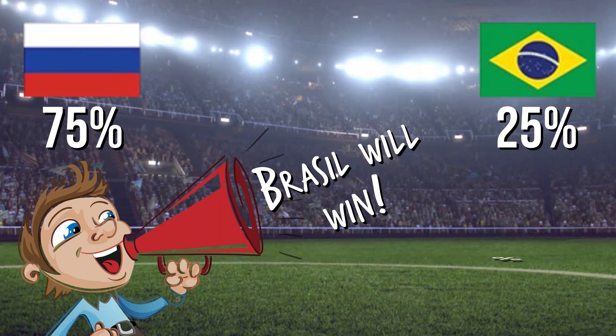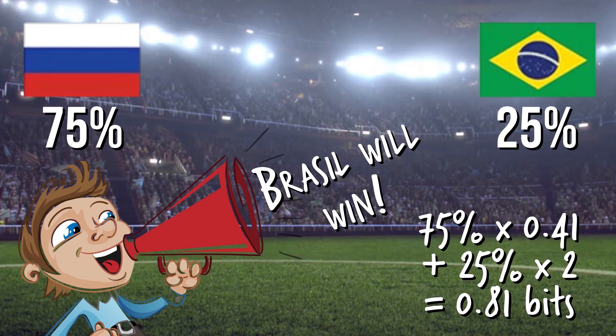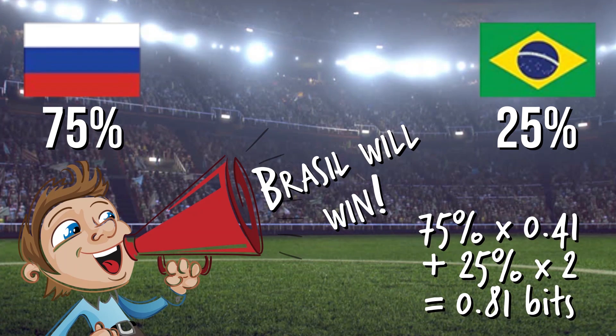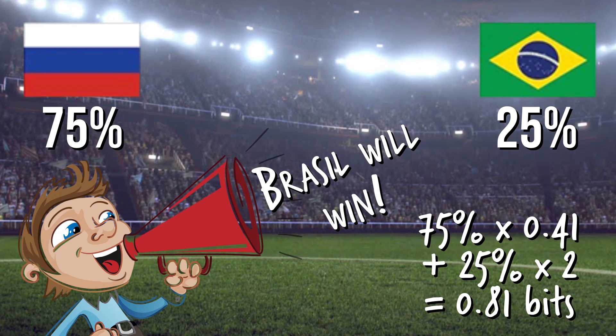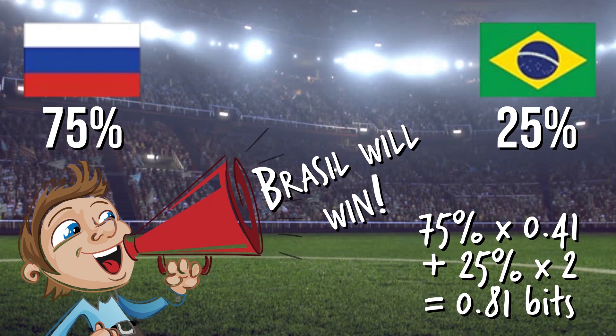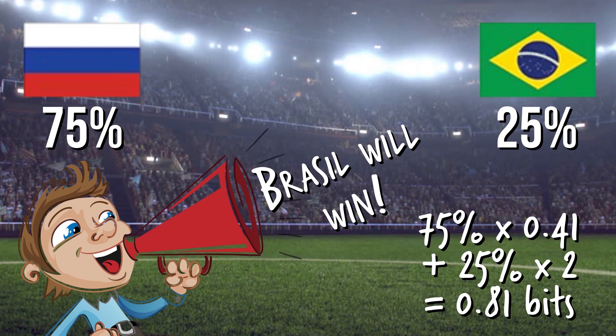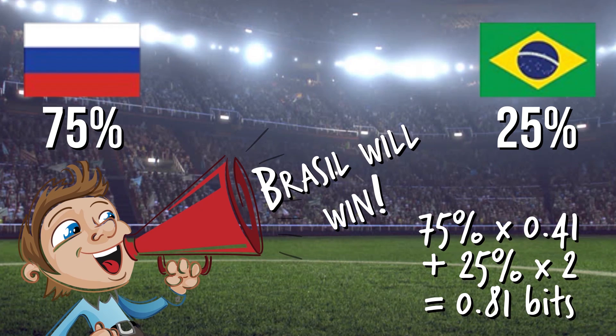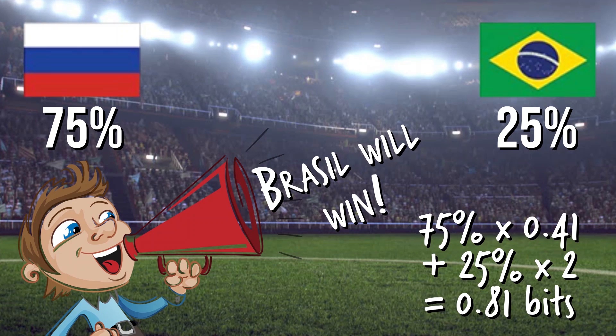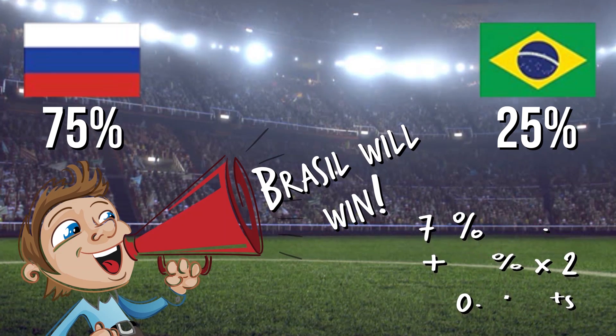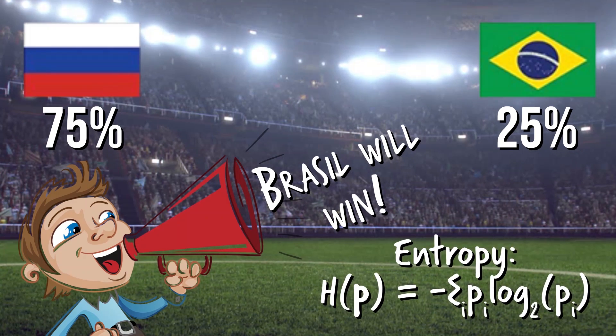The log of 1 over x is equal to the negative log of x. So the equation to compute the number of bits comes out to minus the binary log of the probability 25%. We can compute the same for the other team. We can sum up these values to compute an average number of bits the service will tell us, and this is considered the entropy.